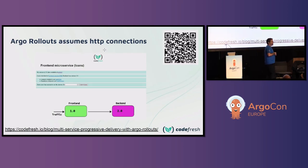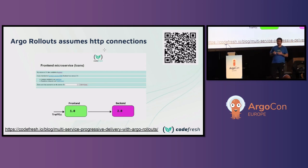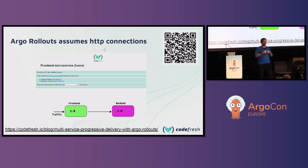As part of my job, I monitor the CNCF Slack channel and the ArgoRollouts channel, and I see all the questions people ask. One of the most common questions is: ArgoRollouts works great for a single application, but I have two applications — usually a front-end and a back-end — and I want to do progressive delivery for both, with the new back-end talking to the new front-end. I did a presentation last year on this.